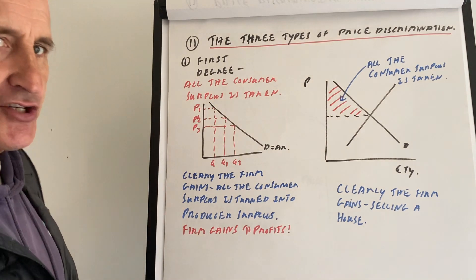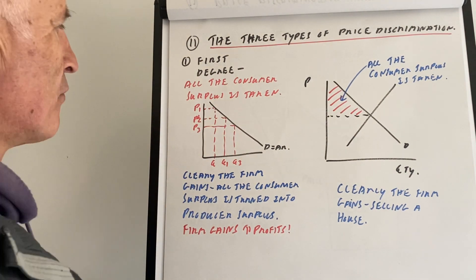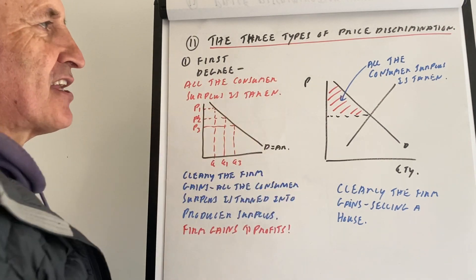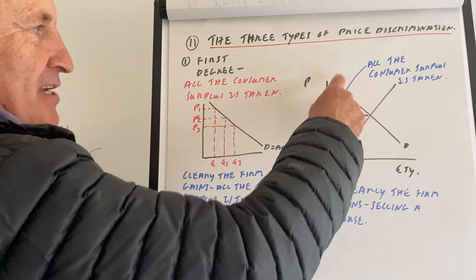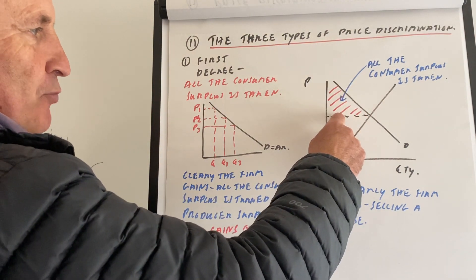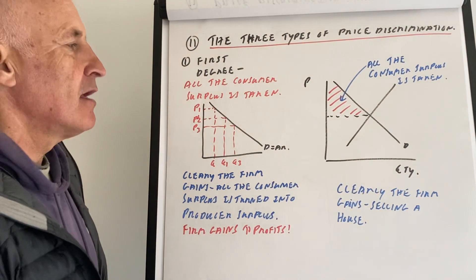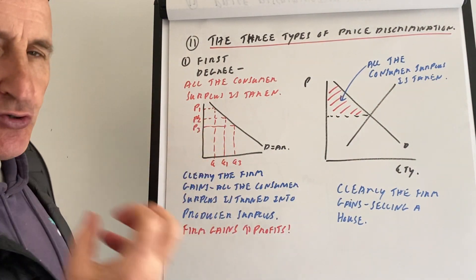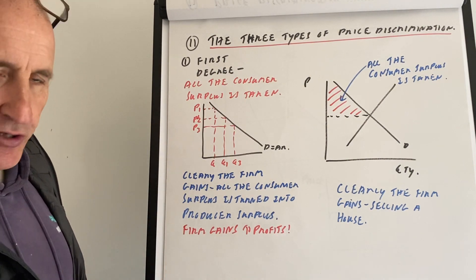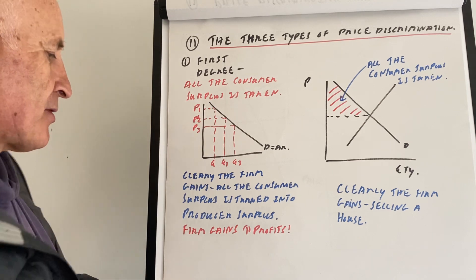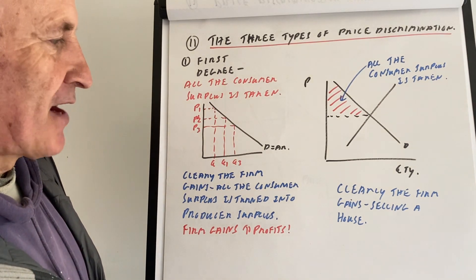There are three types of price discrimination. There's first degree price discrimination, where all the consumer surplus is taken — there is no consumer surplus. The consumer surplus is where the value that we place on the good is more than we pay for the good. Here, the producer is able to extract all of the consumer surplus, turning it into producer surplus. The firm gains more profits, so that is clearly working for the firm.